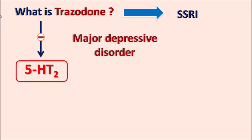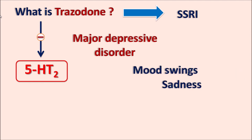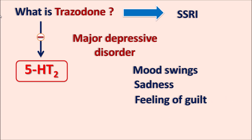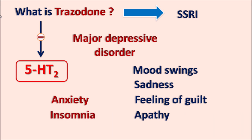Trazodone is used in the treatment of major depressive disorder (MDD), a mood disorder presenting with depressive symptoms such as mood swings, sadness, feelings of guilt, apathy, lack of initiation, anxiety, and insomnia. SSRIs like trazodone can be used in such conditions.